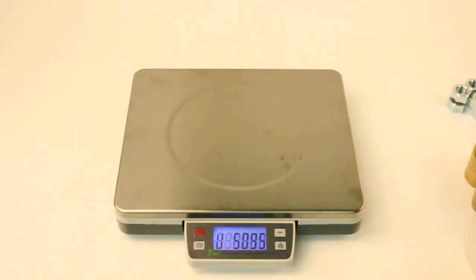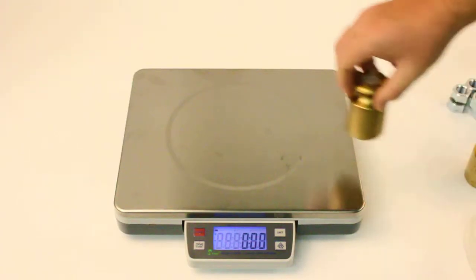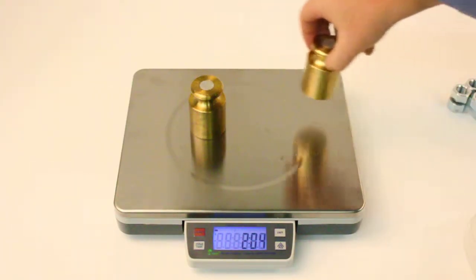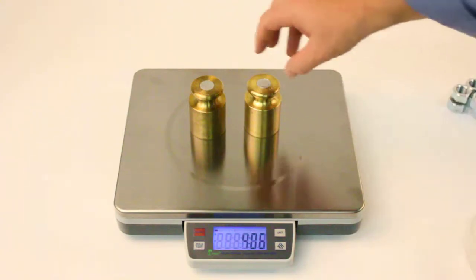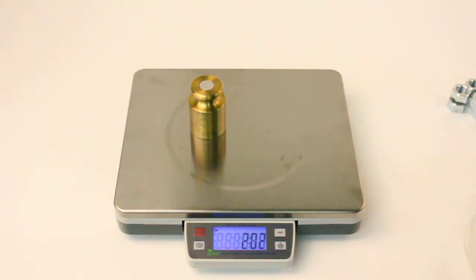The CSS Compact Shipping Scale is a rugged industrial scale with a large stainless steel weighing pan. It can be used for simple weighing, or it can be used for parts counting.